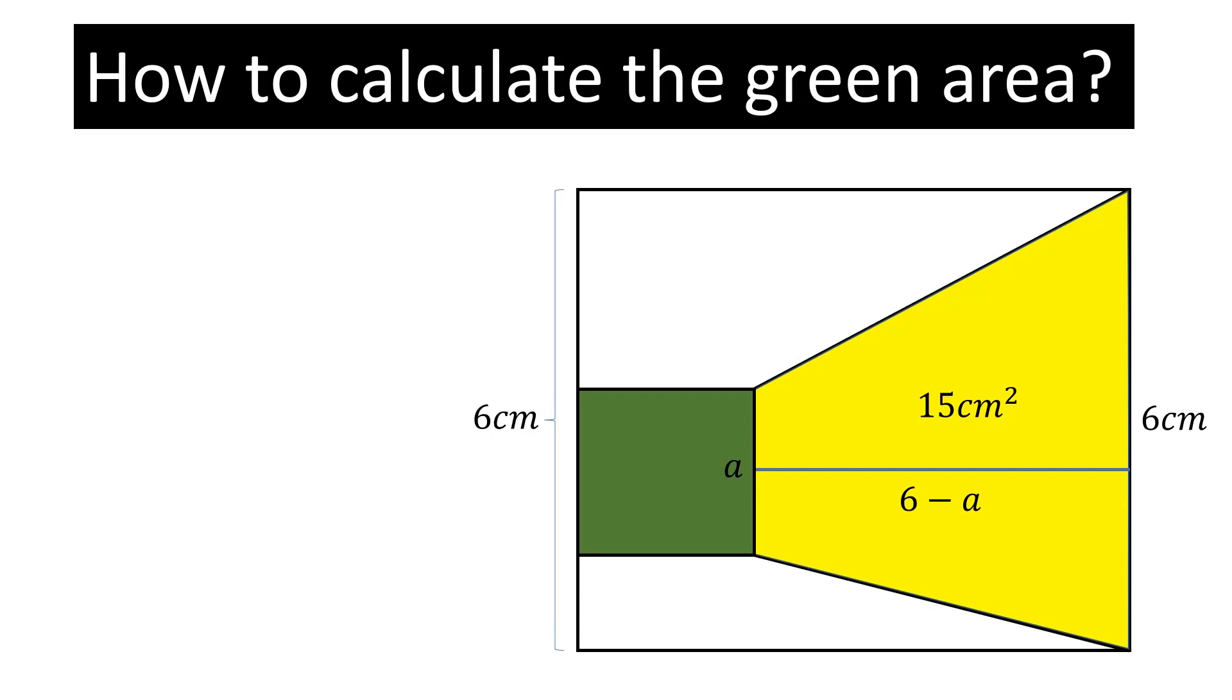So, area of the trapezium is equal to 1 over 2 multiplied by height, height of the trapezium and multiplied by the sum of the two parallel sides.